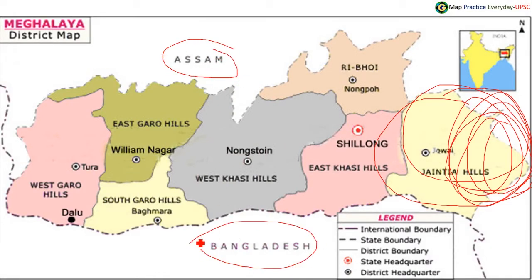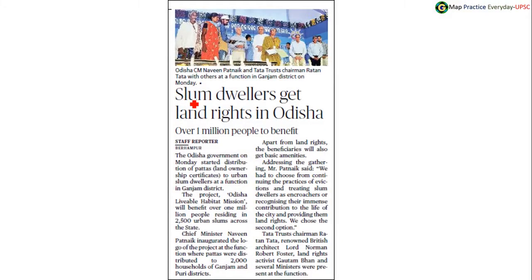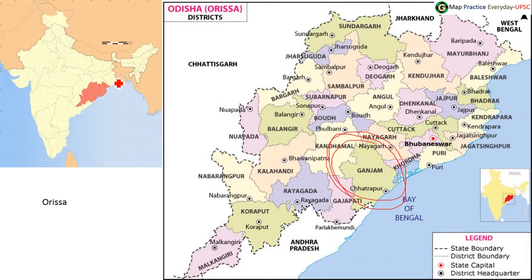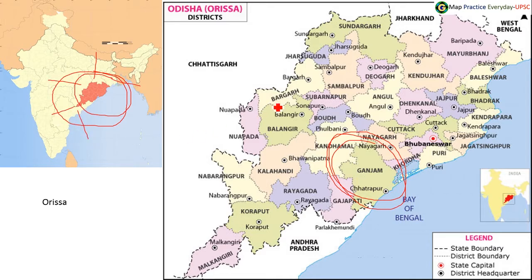Slum dwellers get land rights in Orissa — Chief Minister Navin Patnaik and Tata Trust chairman Ratan Tata attended a function where slum dwellers will be getting land rights in Orissa. The function was held in Ganjam district of Orissa. Orissa shares its boundary with Chhattisgarh, Jharkhand, West Bengal, Andhra Pradesh, and partly Telangana. Ganjam district is located in this part of Orissa, and it is also attached to Chilika Lake — to the west of Chilika Lake, Ganjam district is present.